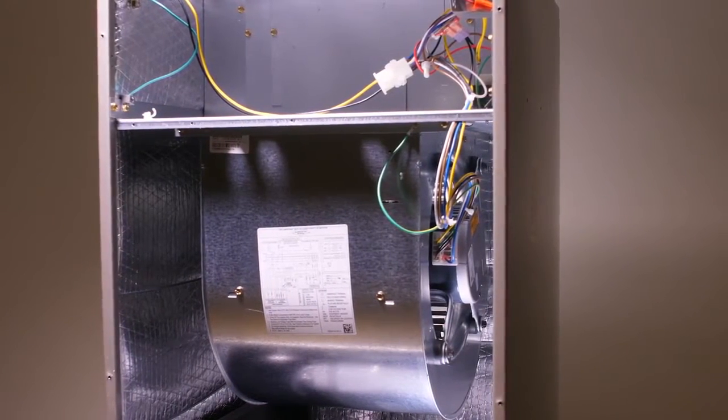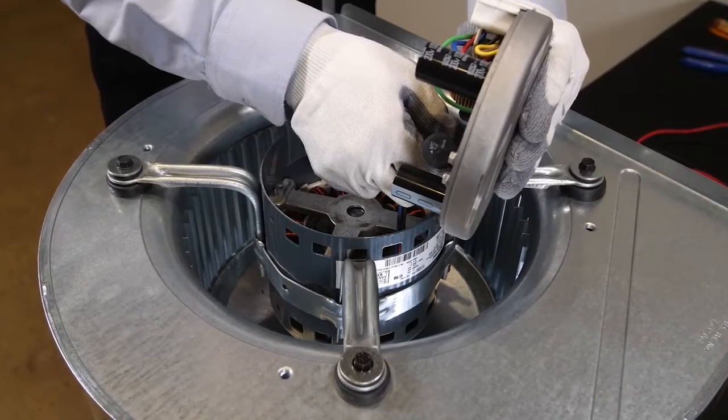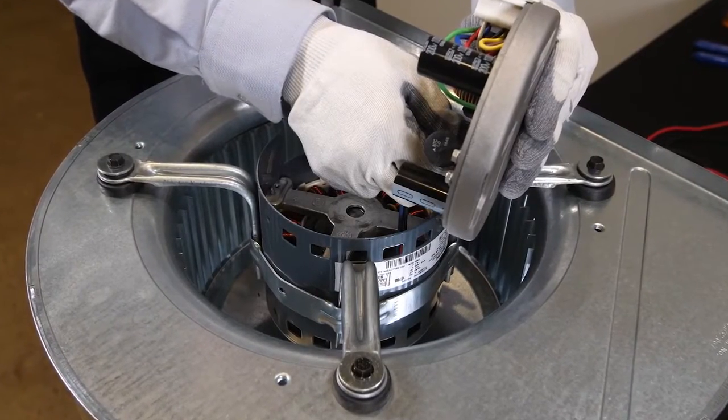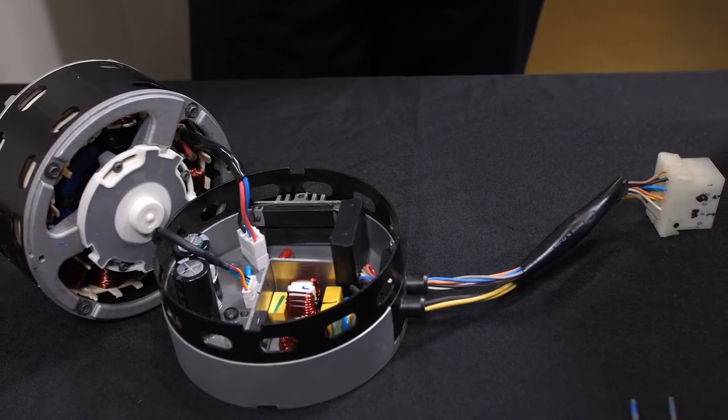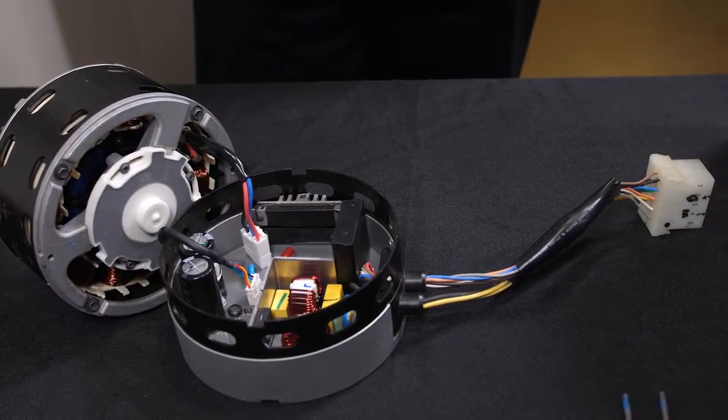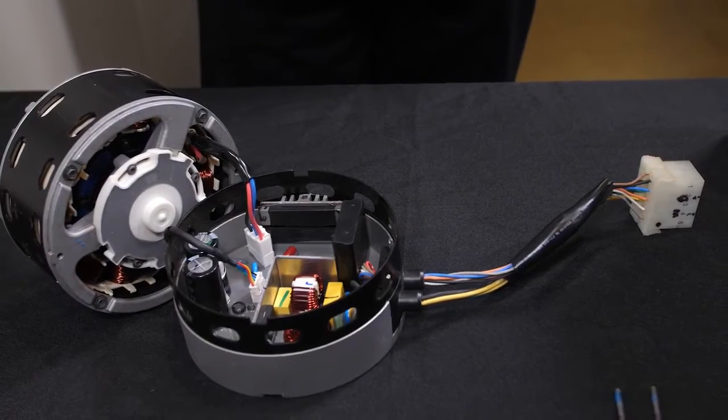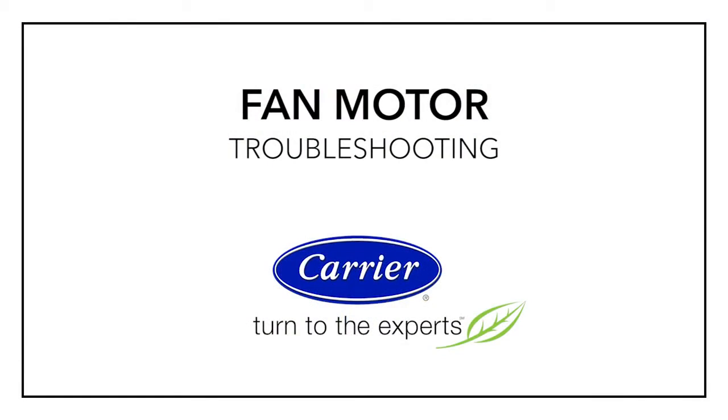This video will walk you through ways to troubleshoot the motor and modules separately so you can accurately identify the real problem. You may need to replace only the module which involves only two bolts, making it a faster and easier part change than changing the entire motor. It just makes sense to replace only what needs replacing.